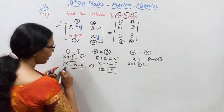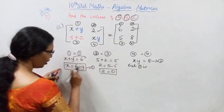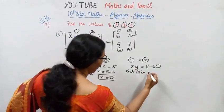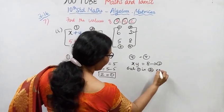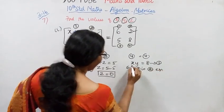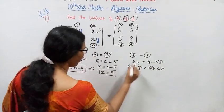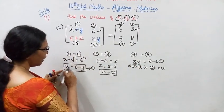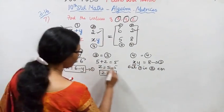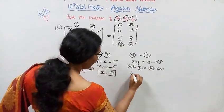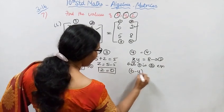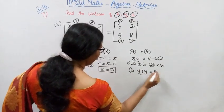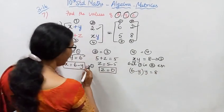Now substitute x equal to 6 minus y into the second equation xy equal to 8. This gives us: 6 minus y, into y, equal to 8.